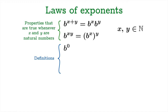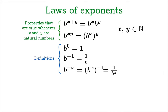Now we're going to make some definitions. What does it mean to take b to the 0? We define that quantity to be 1, so that the two laws of exponents continue to hold — there's only one choice for our definition. Similarly, b to the negative 1 must be defined as the reciprocal of b. And b to the negative x, if the second law of exponents holds, is the same as b to the x to the negative 1, which must be the reciprocal of b to the x. Now our exponents can be integers, and the laws of exponents continue to hold for integer-valued exponents.